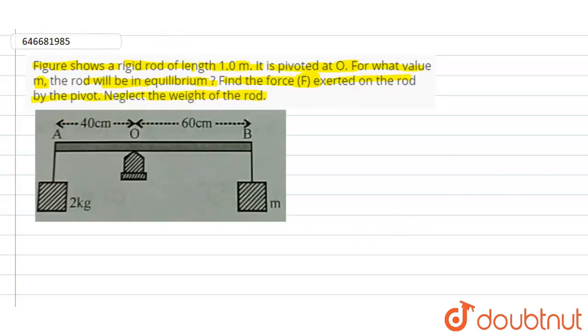According to the given information, if you look into this particular figure, this is a pivot at point O. From point O to point A we have 40 centimeters of distance, and from point O to B we have 60 centimeters. We have two masses connected along the ends at A and B with mass of 2 kg and m. This is the direction of force F1 and this is the direction of force F2.